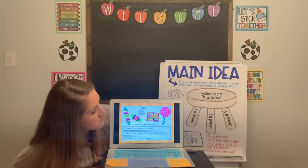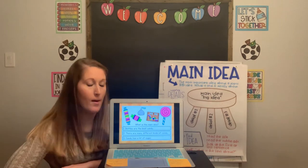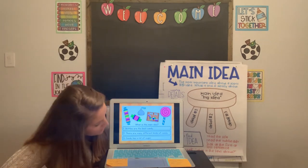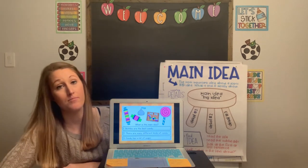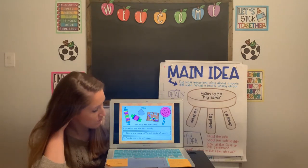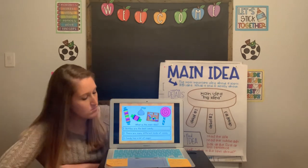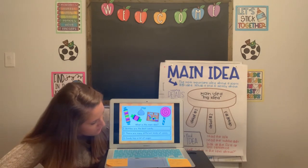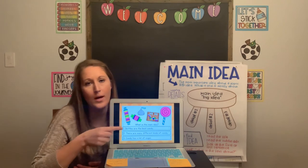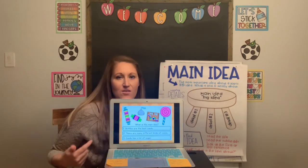Here we see M&Ms, Hershey's Kisses, and maybe lollipops. Our choices are: one, Skittles is the best candy; two, there are many different types of candy; and three, candy has a lot of sugar. Skittles are the best candy — that's an opinion. Candy has a lot of sugar is a fact about candy, but that's not what these pictures are trying to teach us. The answer is number two: there are many different kinds of candy. We're being shown many different kinds of candy here.